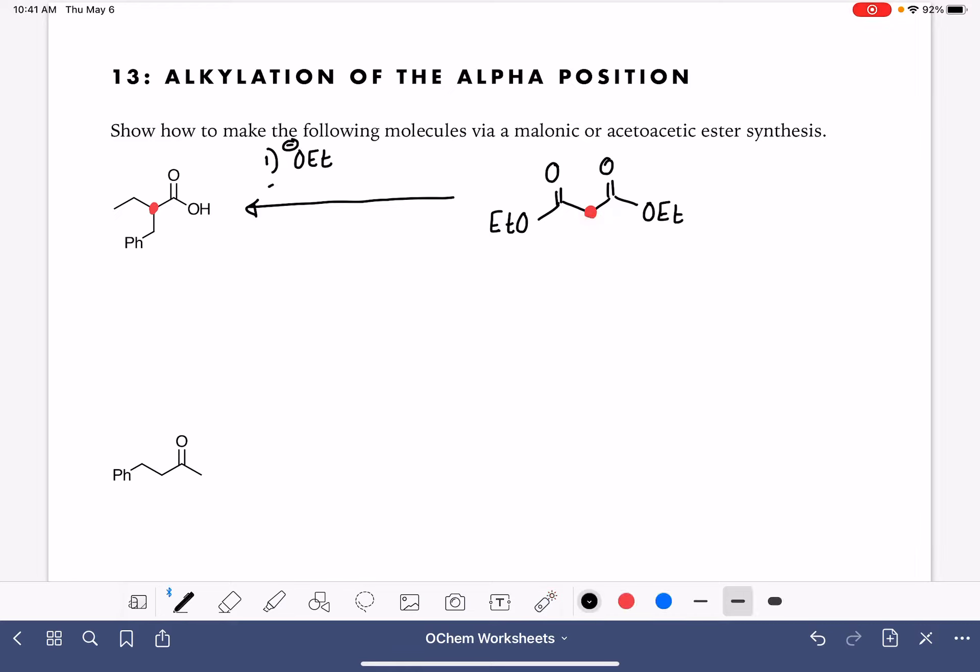And then after that, we are going to add one of the alkyl groups that we want to have in our product. It doesn't matter which one we do first, so let's just do the ethyl group first. We're going to add it as an alkyl halide.